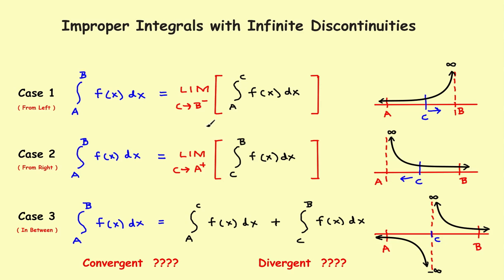This is part 10 of the video series on improper integrals. On this part of the series we're looking at integrals with infinite discontinuities. In the part 9 video we looked at a case 2 problem where you had an asymptote on the left-hand side of the interval. Now we'll look at a case 1 problem where you have an asymptote on the right-hand side. I would definitely watch the part 8 and part 9 videos that explain where all this stuff came from.